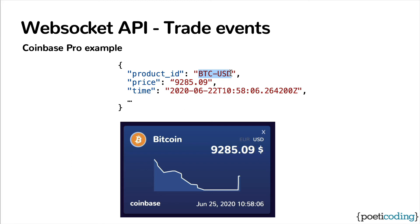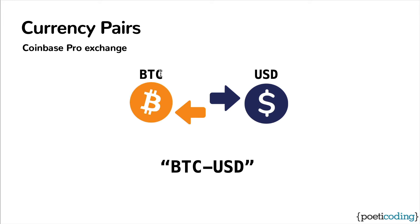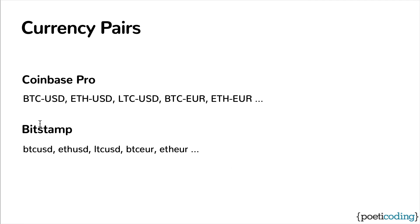This string — in this case BTC-USD — is a currency pair, which is used to uniquely identify the exchanged currencies. Coinbase calls it product ID, but across most exchanges this is called a currency pair. In Coinbase, pairs are defined with strings like BTC-USD, and we have many currency pairs like Bitcoin-USD, Ethereum-USD, Litecoin-USD, and the same cryptocurrencies with Euros, and many others. While on Bitstamp, the pairs are lowercase strings without the dash — so BTCUSD, ETHUSD, etc.